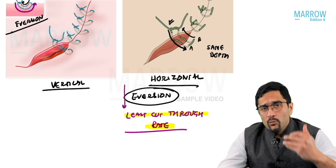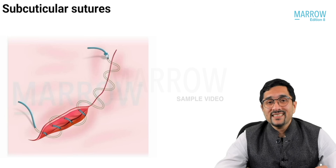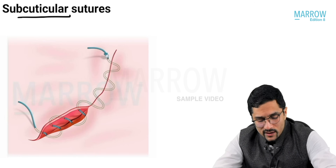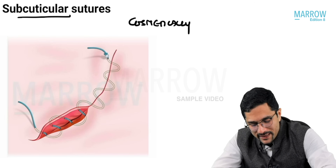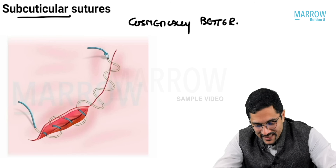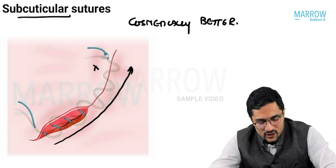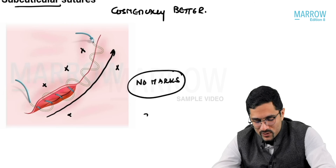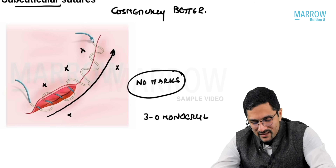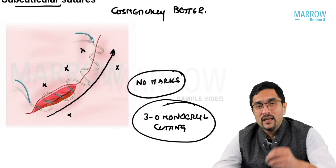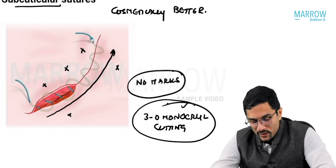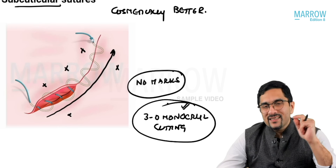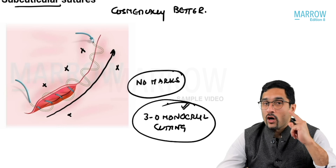Moving on to subcuticular sutures — very important, asked multiple times in recent years. Subcuticular sutures are cosmetically better because the entire thread is inside with no marks on the skin. The suture material commonly used is 3-0 monocryl on a cutting needle. We will discuss monocryl and cutting versus round body needles later in this module.